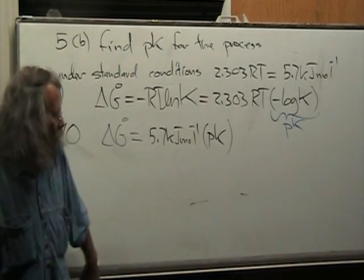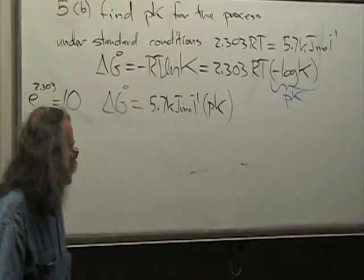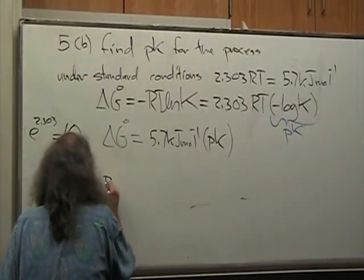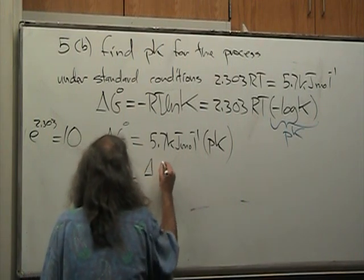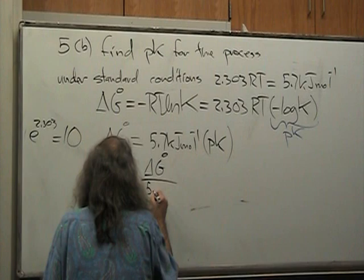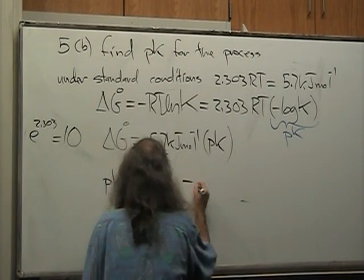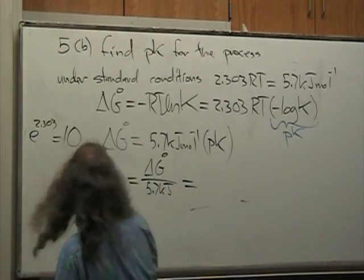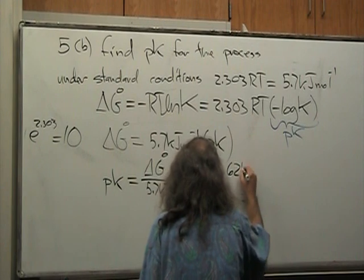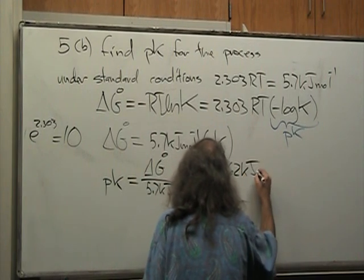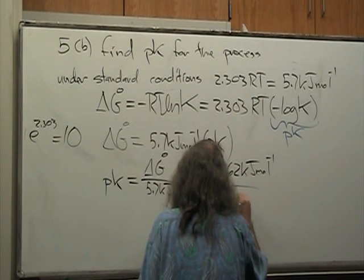Because this is something that's going to, this is a thing that can repeat itself a lot. And that means that, therefore, pk is equal to delta G-naught over 5.7 kilojoules. And that means that's equal to what we found is 63.62 kilojoules per mole divided by 5.7 kilojoules.